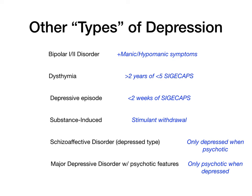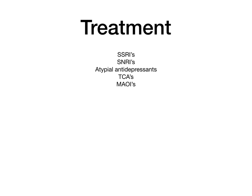Now let's talk about treatment for depression. As an overview, treatment consists of some combination of SSRIs, SNRIs, atypical antidepressants, TCAs, or monoamine oxidase inhibitors. Since the first-line treatment for depression is SSRIs, that's what we'll focus on.